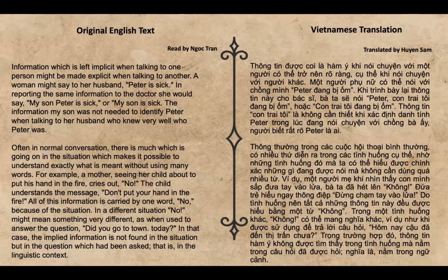In a different situation, 'no' might mean something very different — as when used to answer the question, 'Did you go to town today?' In that case, the implied information is not found in the situation, but in the question which had been asked.